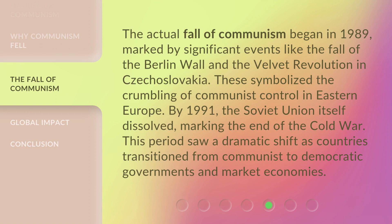The actual fall of communism began in 1989, marked by significant events like the fall of the Berlin Wall and the Velvet Revolution in Czechoslovakia. These symbolized the crumbling of communist control in Eastern Europe. By 1991, the Soviet Union itself dissolved, marking the end of the Cold War. This period saw a dramatic shift as countries transitioned from communist to democratic governments and market economies.